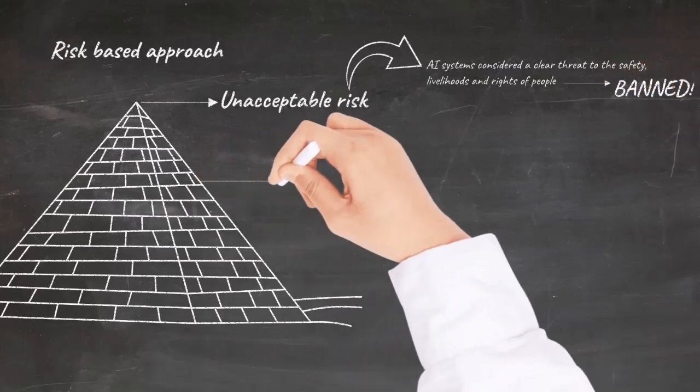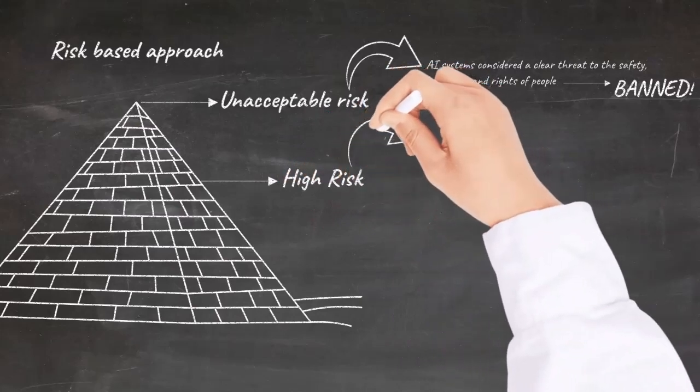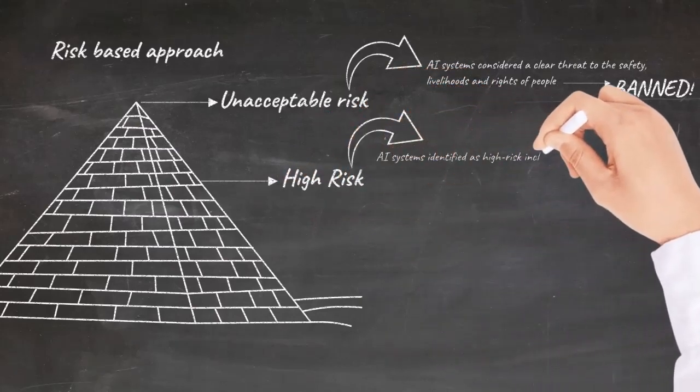The next category are the high-risk systems. AI systems identified as high-risk include AI technology used in specific, listed applications.